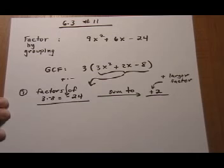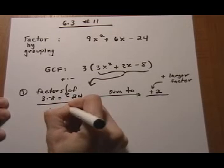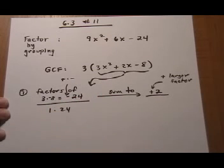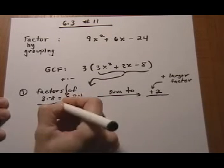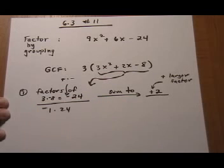So when I start listing my factors, like 1 times 24, I want it to be negative, opposite signs, and plus is going to be larger. Therefore, I'll make the smaller number, the one, a negative one.